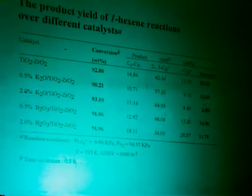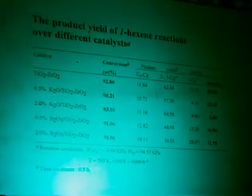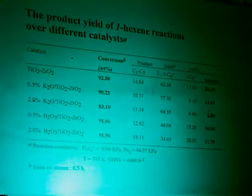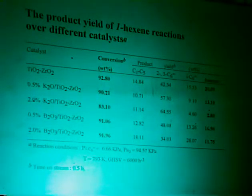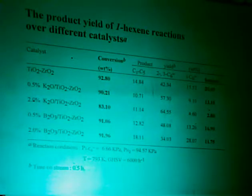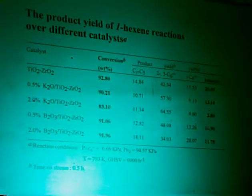The next reactant is 1-hexene — an olefin. Here, using the same catalyst set, the conversion does not change much with doping. So we know both the acid amount and the base amount contribute to the 1-hexene reaction. The benzene yield decreases with increasing doping amount, so for the olefin 1-hexene, the paired acid-base site is also the active site for dehydrogenation. But what happens on the individual acid side or individual base side?